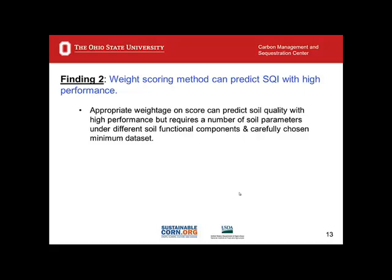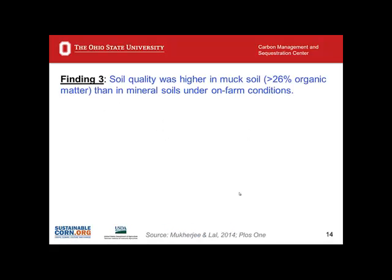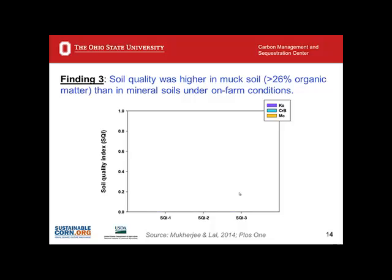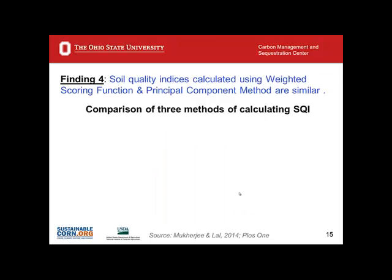Finding two: the weighted scoring method can predict soil quality index with high performance. The appropriate weighted score can predict soil quality with good accuracy, but requires a number of soil parameters under different soil functional components and a carefully chosen minimum data set. Finding three: soil quality was higher in organic versus inorganic or mineral soils under on-farm conditions. The data shows that the yellow (organic soil) compared to Kokomo and Crosby — the purple and green soils — has a higher soil quality index, as expected because of the high organic matter content.